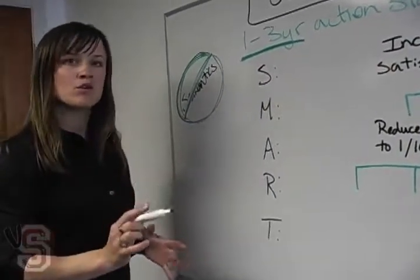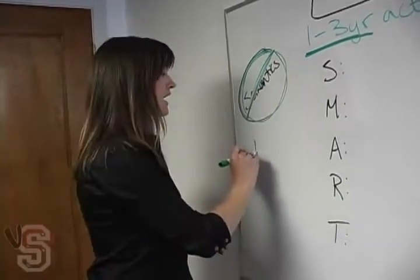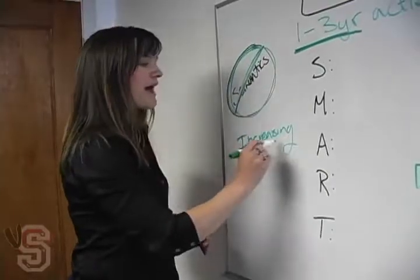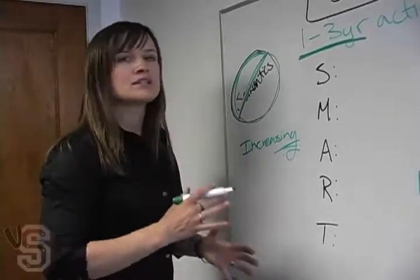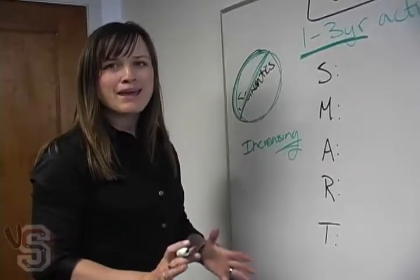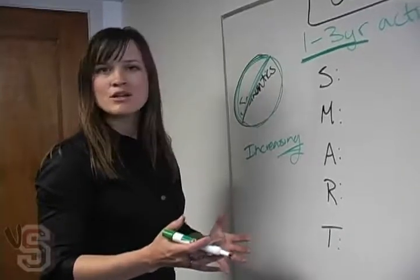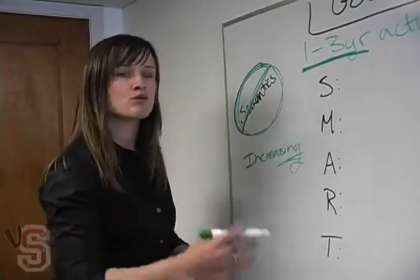The big thing that you need to do is make sure that you're actually starting it with a verb, such as increasing. A good goal actually says what dial are we trying to move: increasing, decreasing, reducing. Maintaining is okay if you just want to articulate that you're trying to do something, but you're not necessarily trying to change it. But most of the time in strategy development, we're trying to change something. We're trying to see a movement.